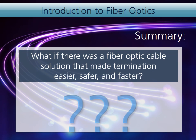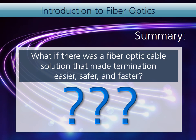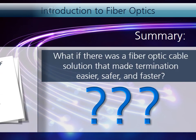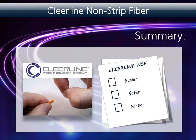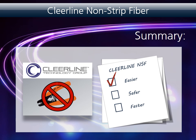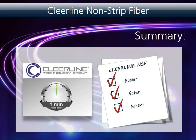What if there was a fiber optic cable solution that made termination easier, safer, and faster? Something revolutionary. Clearline non-strip fiber is that solution. Clearline NSF is easier — it requires fewer tools and has a much more forgiving bend radius. Clearline NSF is safer — it eliminates dangerous shards of fiber and the need for alcohol solvents. Clearline NSF is faster — it can be terminated in about 60 seconds. In short, Clearline NSF delivers all of the advantages of fiber optics without the costly and time-consuming termination process of typical fiber.